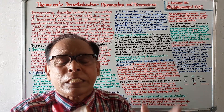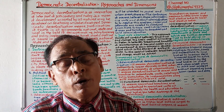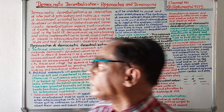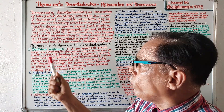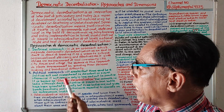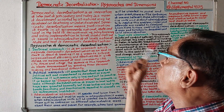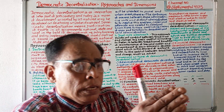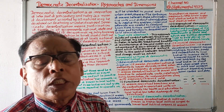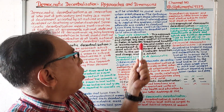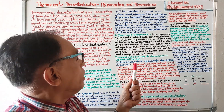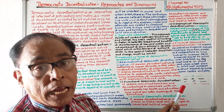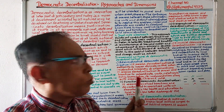So, we have discussed four approaches of democratic decentralization: doctrinal approach, political approach, administrative approach, and dual role approach. Now let us discuss the dimensions, or types, of democratic decentralization. There are five types.